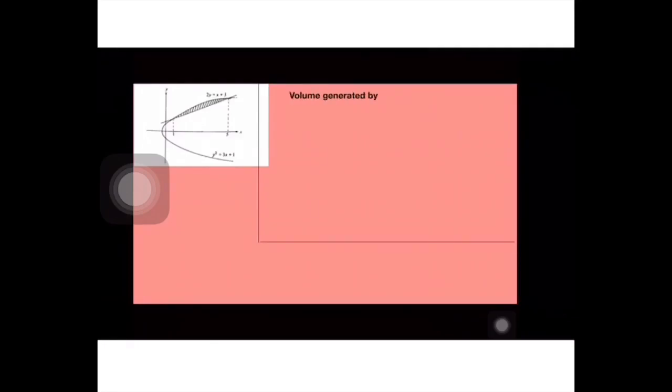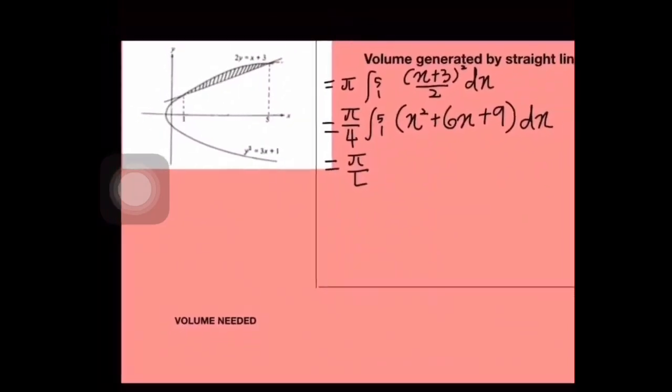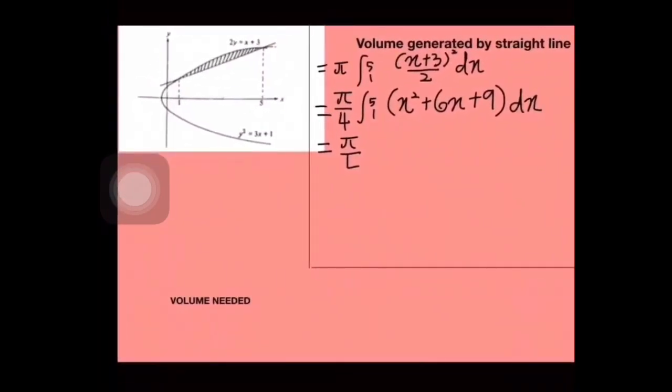Sekarang kita nak cari kita nak tengah-tengah yang berlorek tu, apa nak kena buat? Kita kena cari pula volume untuk straight line. Sama je, range dia 1 dan 5. Tapi dia lain sikit sebab equation straight line dia bukan Y square, dia Y sahaja, Y = X tambah 3 per 2. Kita kena squarekan dia.